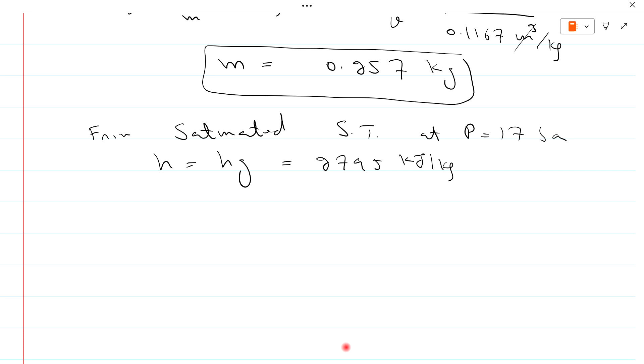But mass is known to us, so total enthalpy is equal to mass times specific enthalpy which is equal to 0.257 kg times 2795 kilojoule per kg.